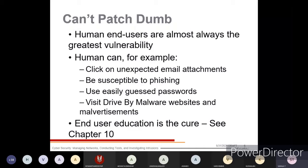The first anti-pattern is 'Can't Patch Dumb.' Human end users are almost always the greatest vulnerability. Humans can, for example, click on unexpected mail attachments — such as virus mails or phishing mails — which will affect your system after clicking on them.